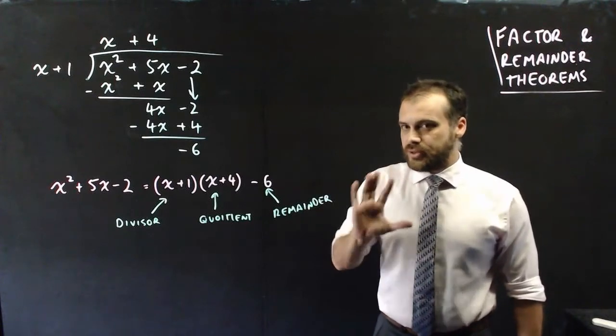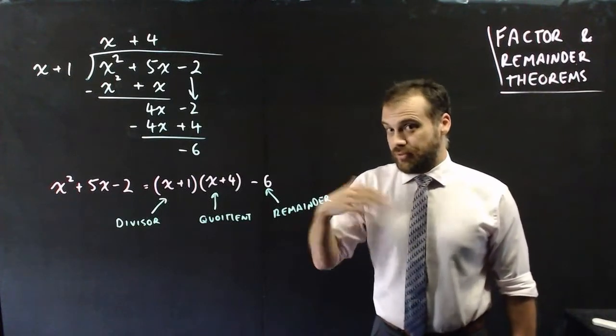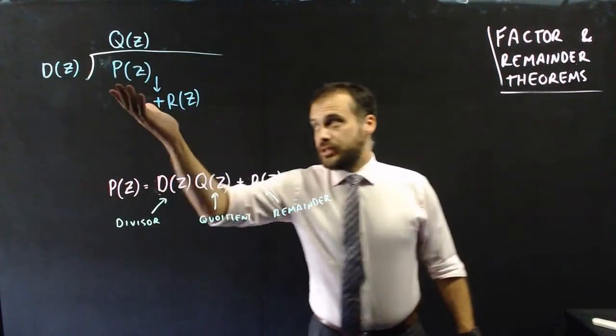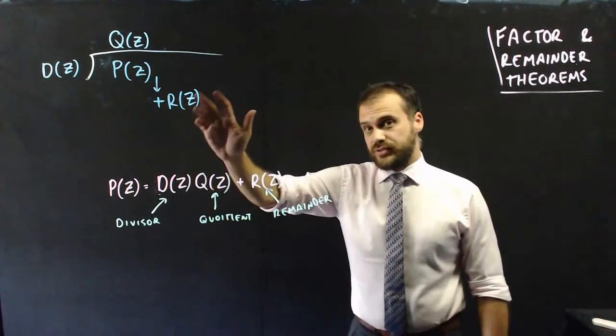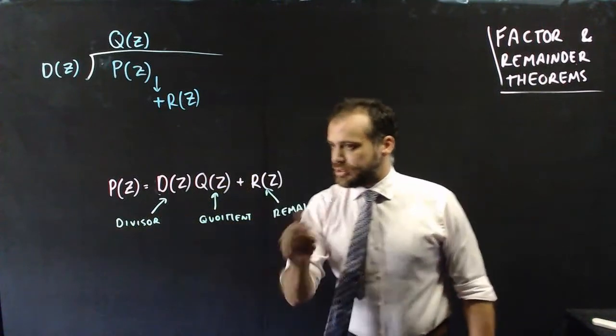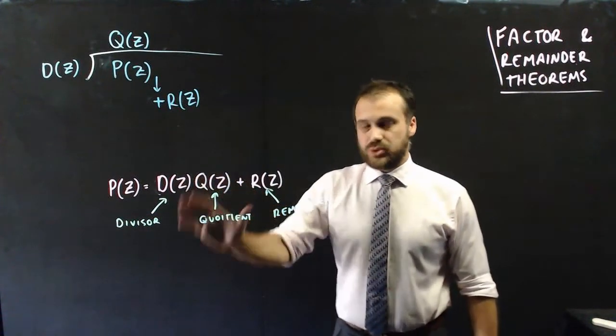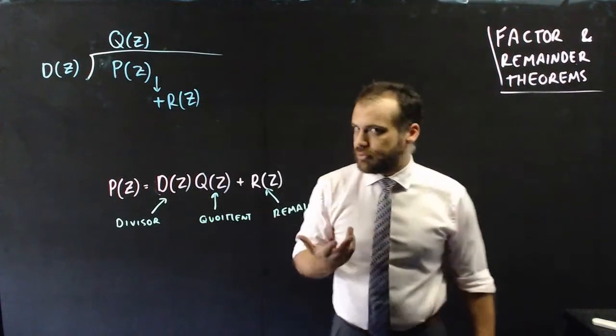Now we can make this a little more general in the following way. If we take P of z and divide it by D of z, we'll get Q of z plus R of z. And that is the important formula here, and that's where we're going to get our factor remainder theorems from.